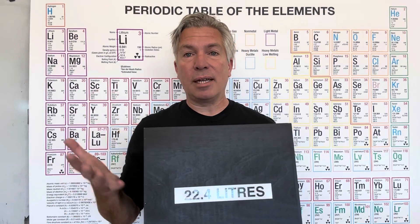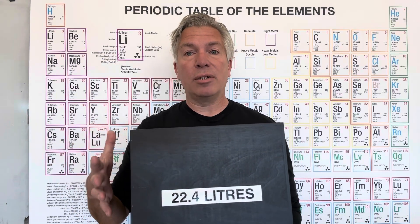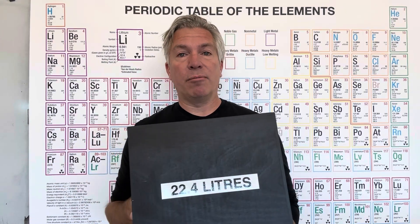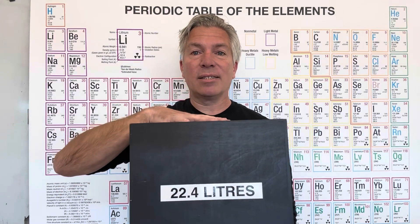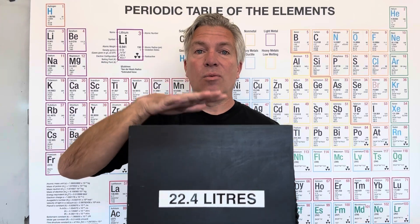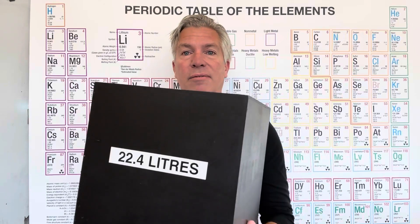We use STP, standard temperature and pressure, to have a baseline, something we can all refer to. Standard temperature is 273 Kelvin, and standard pressure is one atmosphere of pressure. And it turns out that the volume of a mole of any gas under those conditions, assuming it's an ideal gas, would have a volume of 22.4 liters or about the size of this box.